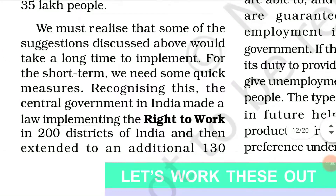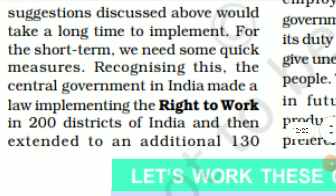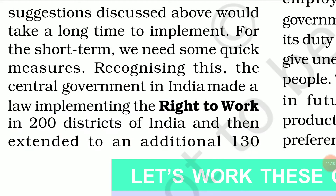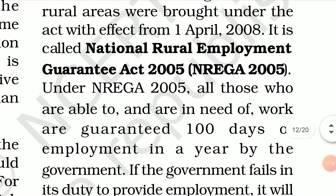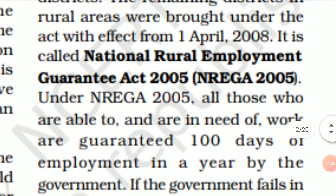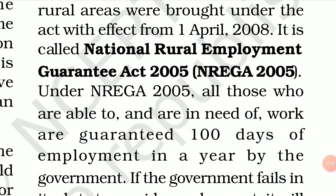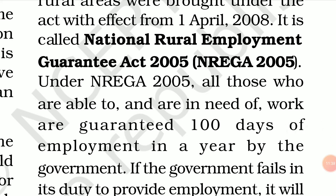Now there is another important initiative — recognizing the central government in India made a law implementing the right to work. Ab ek right to work aaya hai, jaise hamara right to speech hai, right to freedom hai, vaisi ek right to work hai. It was first implemented in 200 districts of India, then extended to an additional 130 districts, and the remaining districts in rural areas were brought under the act with effect from 1st April 2008. It is the National Rural Employment Guarantee Act 2005 — and the name has changed to MGNREGA, that is Mahatma Gandhi National Rural Employment Guarantee Act 2005.